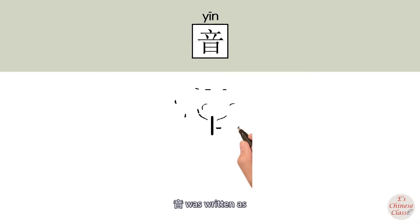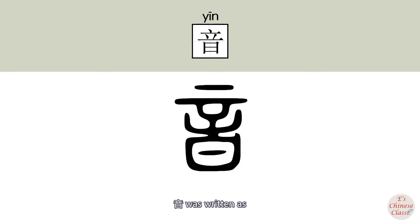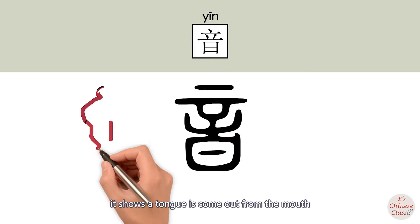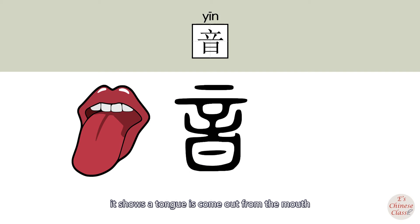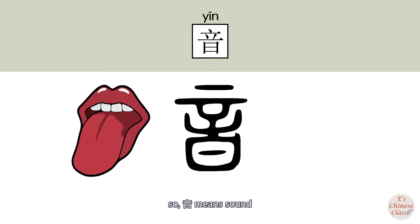In ancient Chinese, 音 was written in a form that shows a tongue coming out of the mouth to make a sound. So, 音 means sound.